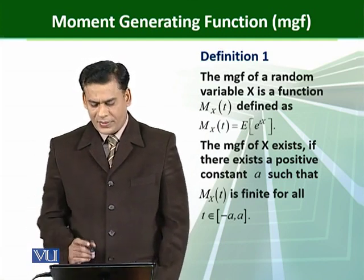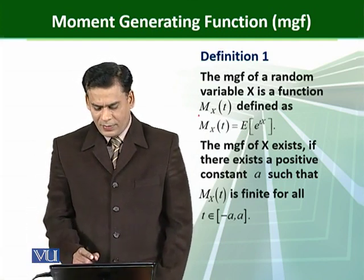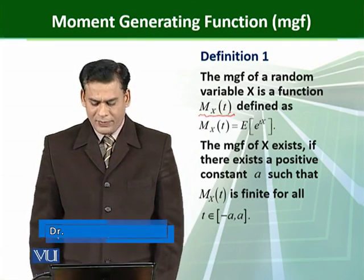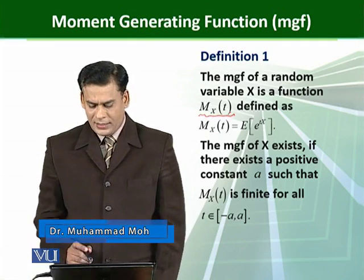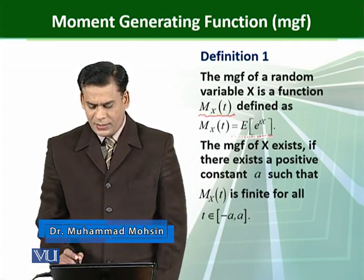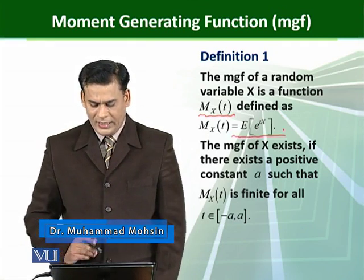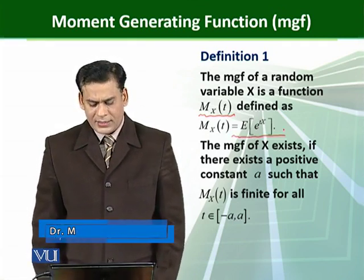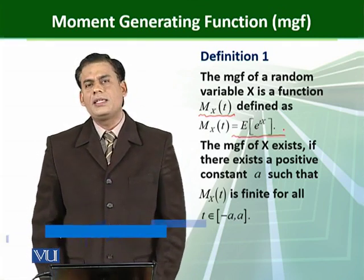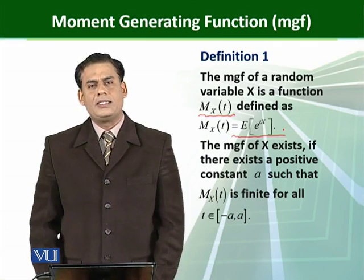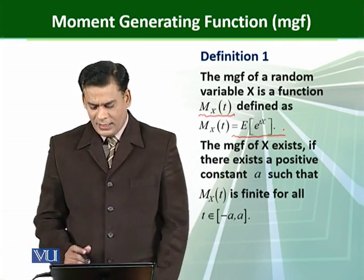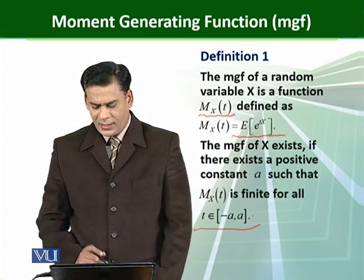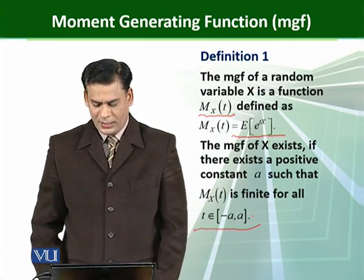...generally denoted by M_X(t) and is defined as M_X(t) = E[e^(tX)]. The moment generating function of X exists if there exists a constant 'a' such that it is defined on the interval minus a to a.